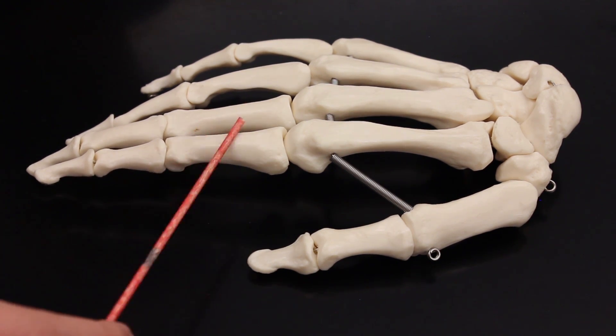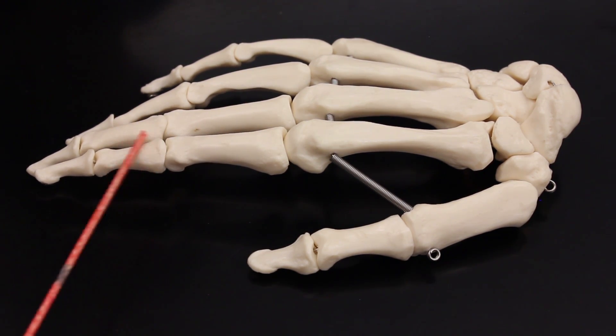This is the proximal phalanx, intermediate or middle, and then distal phalanx of the second digit. Proximal, middle, distal phalanx of the third digit.